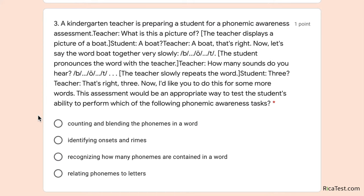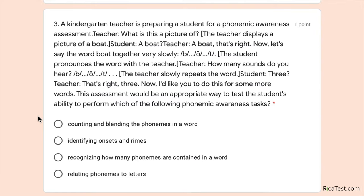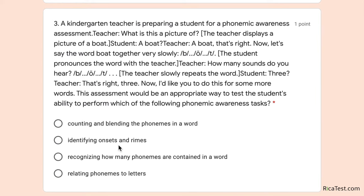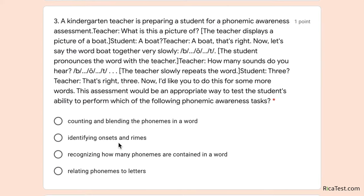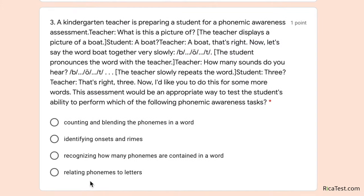The options are: counting and blending the phonemes in a word; identifying onsets and rhymes; recognizing how many phonemes are contained in a word; or relating phonemes to a letter. The onset-and-rhyme option is out because the teacher is segmenting all sounds and asking how many there are — an onset is the initial consonant and the rhyme is the part after that (e.g., in 'pan,' P is the onset and AN is the rhyme). The last option is out because we're not relating phonemes to letters.